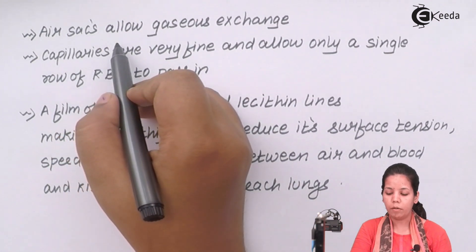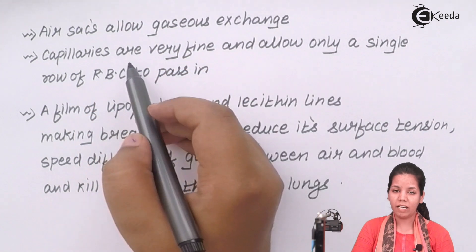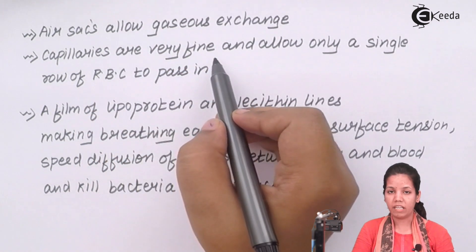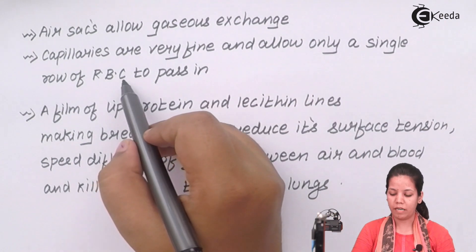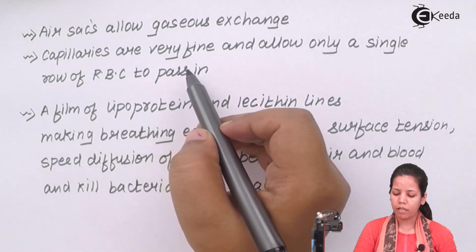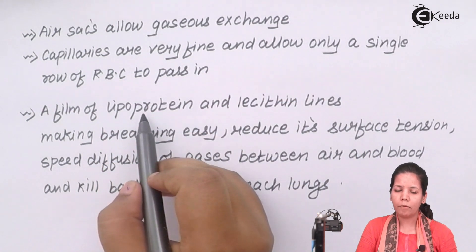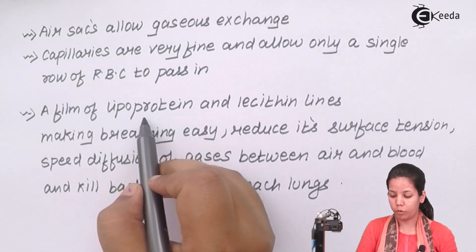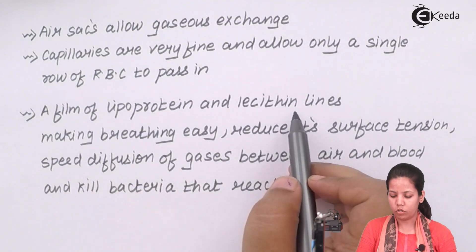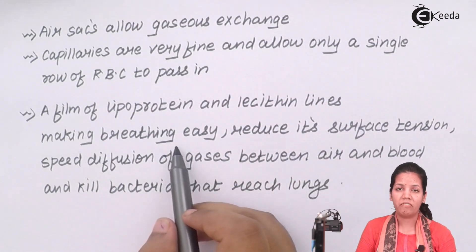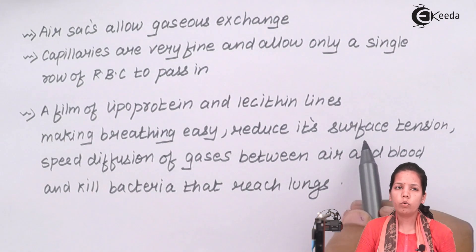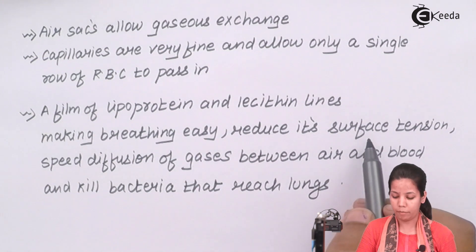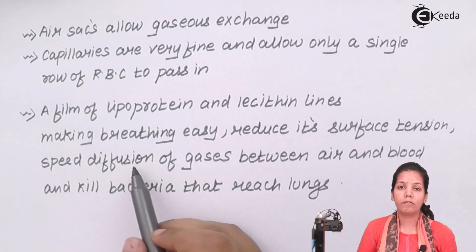The alveoli help in gaseous exchange. The capillaries that lie around are very fine and allow only a single row of RBC, or red blood cells, to pass through. A film or type of protein termed lipoprotein and lecithin is found in those regions. These proteins help breathing take place very easily and smoothly, and also reduce surface tension, which increases the speed of diffusion of oxygen and carbon dioxide.